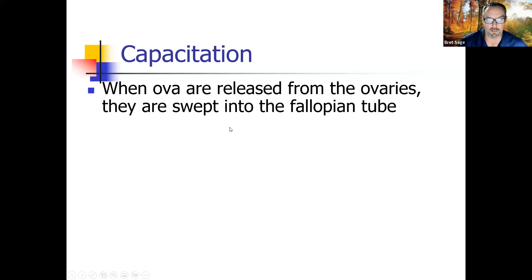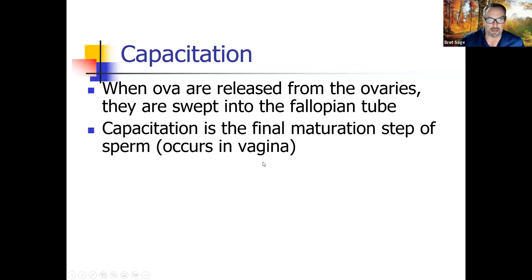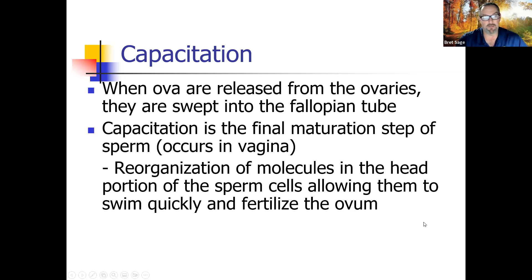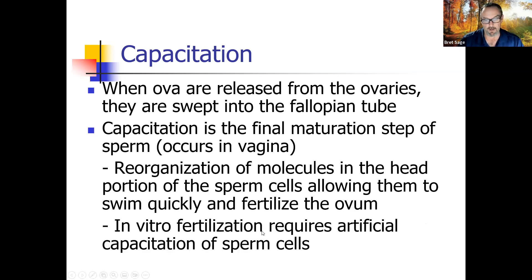Capacitation is the final maturation step of sperm and occurs in the vagina. The sperm cells are developed but not ready to fertilize until they enter the acidic environment of the vagina, where molecules on the head of the sperm reorganize, allowing them to swim quickly and fertilize the ovum — kind of like arming a torpedo before firing it. In vitro fertilization requires artificial capacitation of sperm cells, tricking them into thinking they're inside the female body.